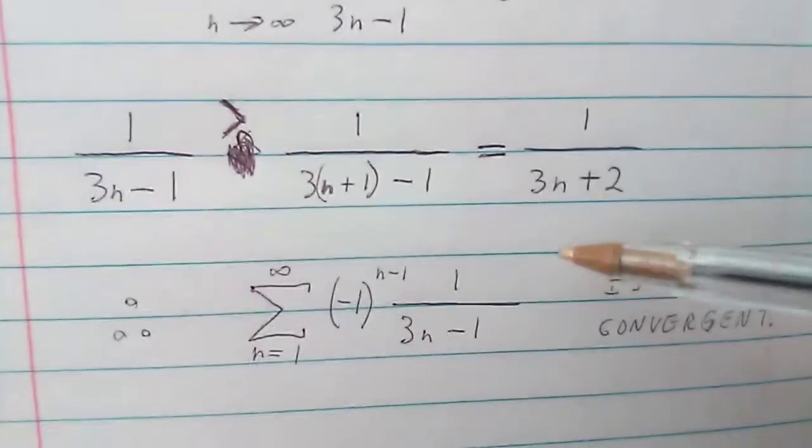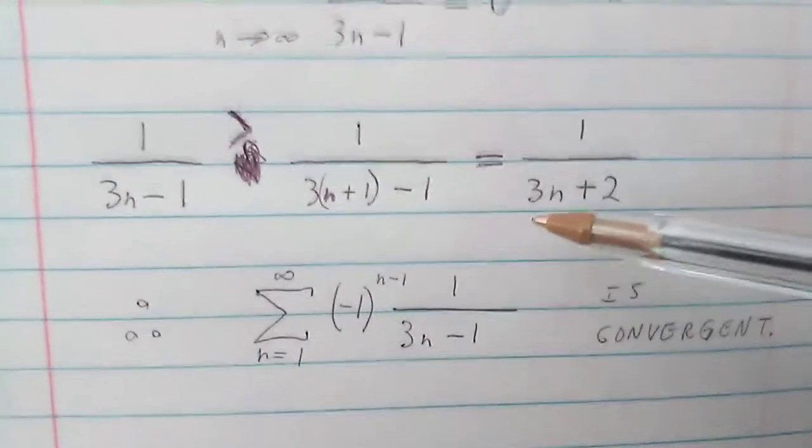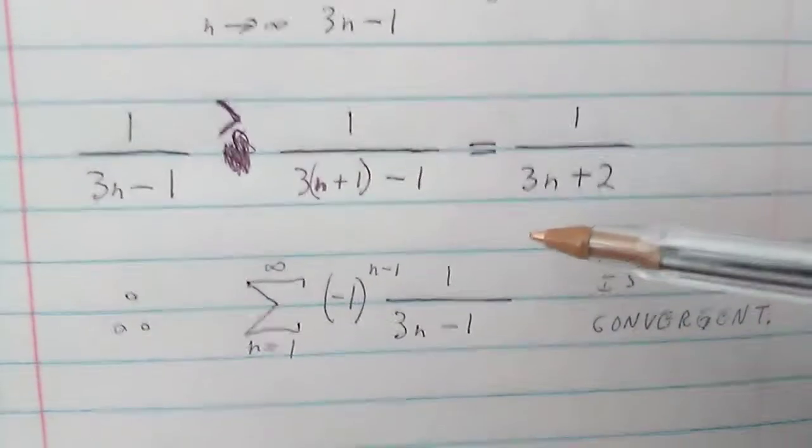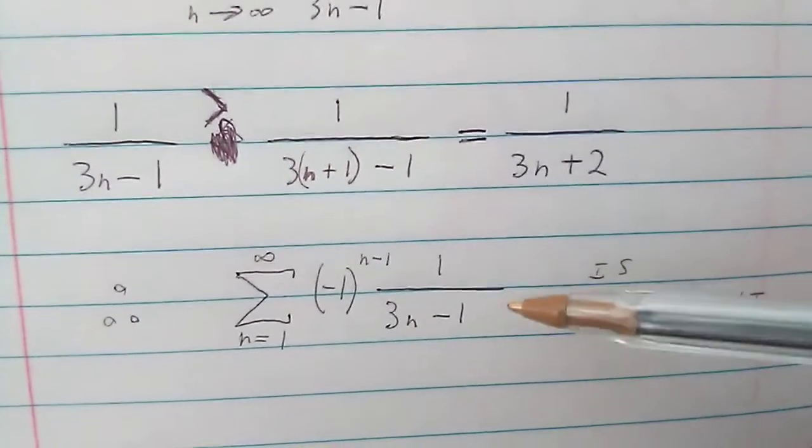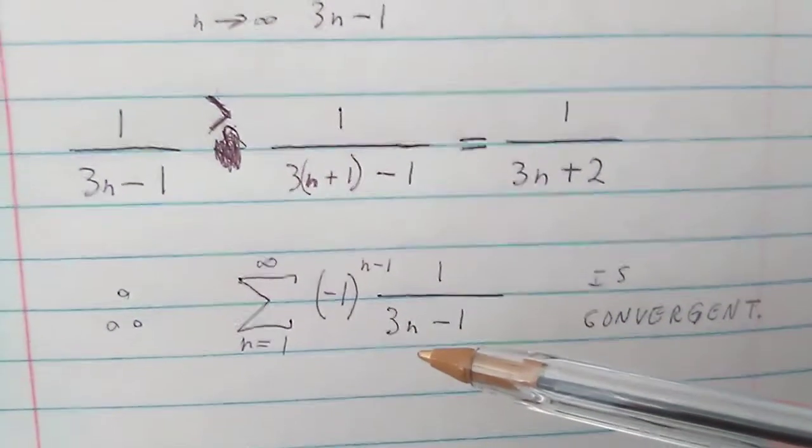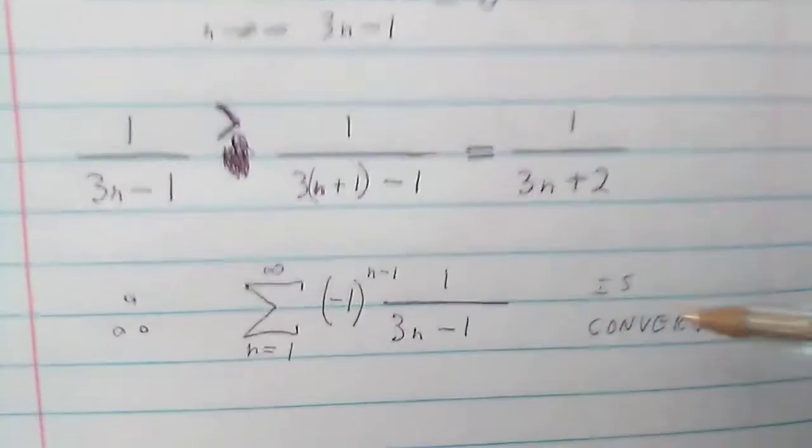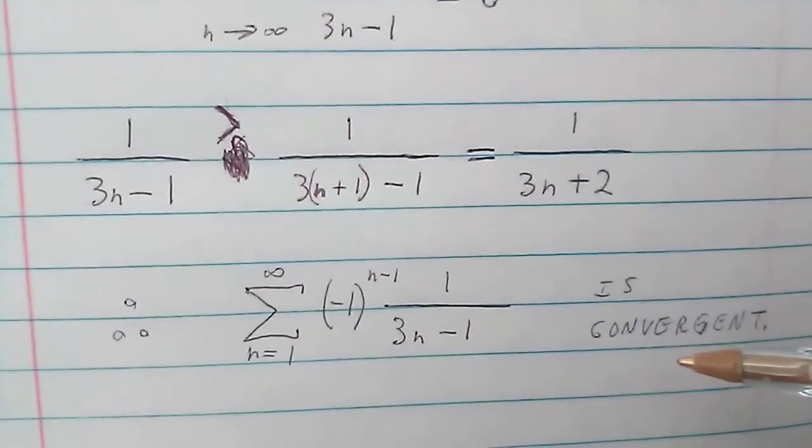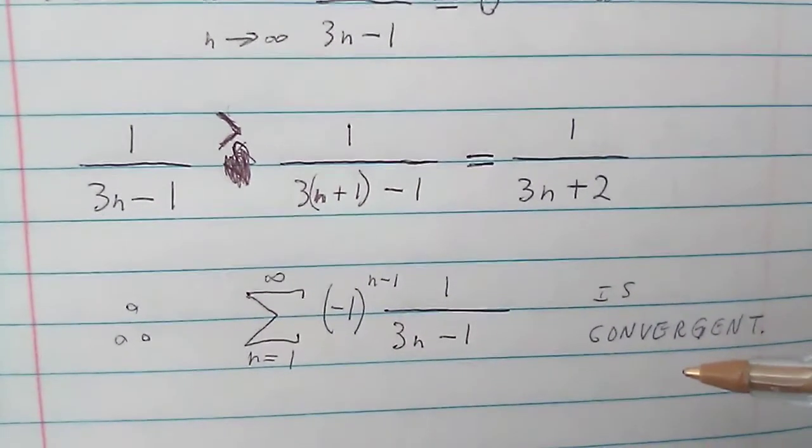And there goes my HVAC system again. Anyway, both the requirements of the alternating series test are met, and the sum that we refer to at the top, which is more than words can properly say, is convergent. Until next time, this is Pentagram Prime signing off.